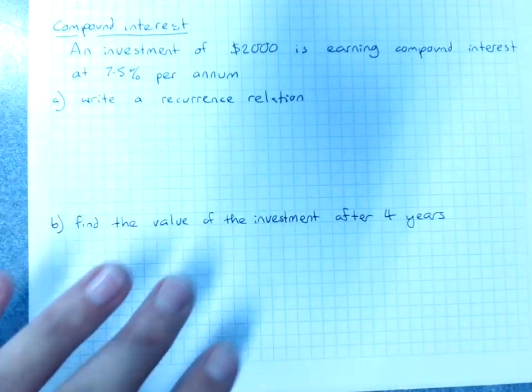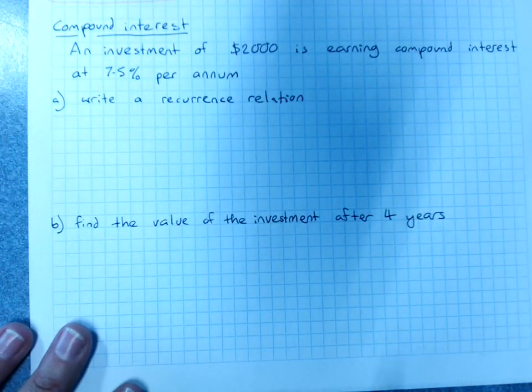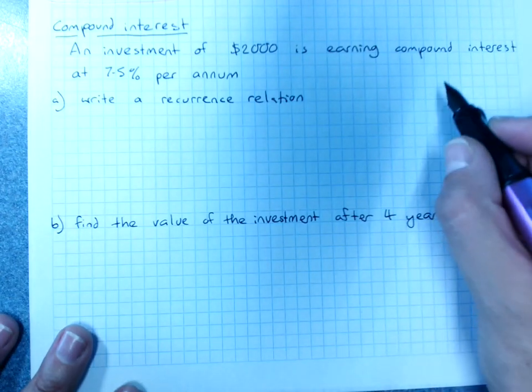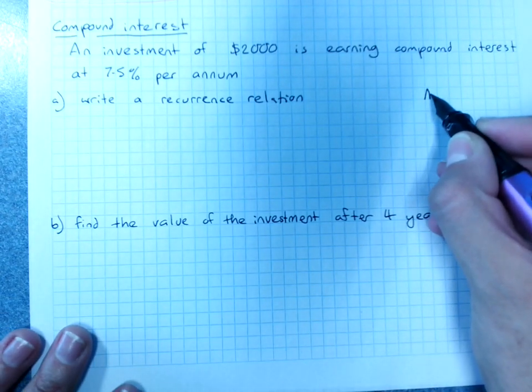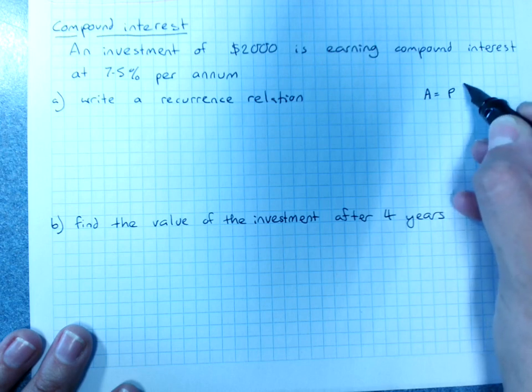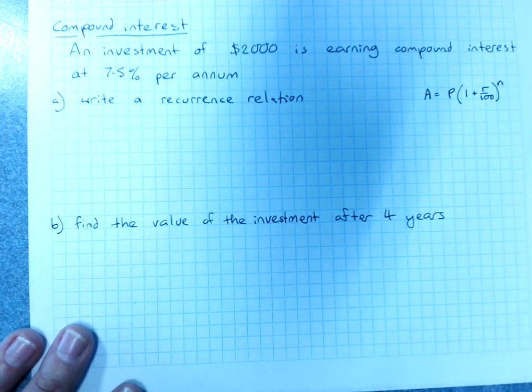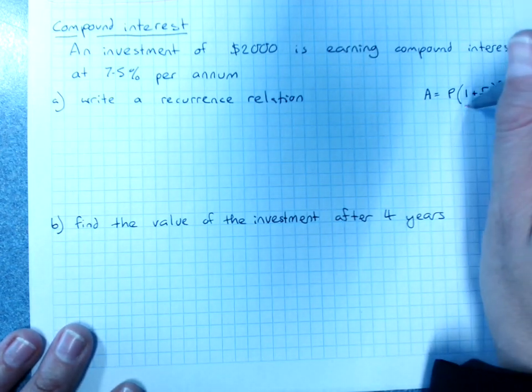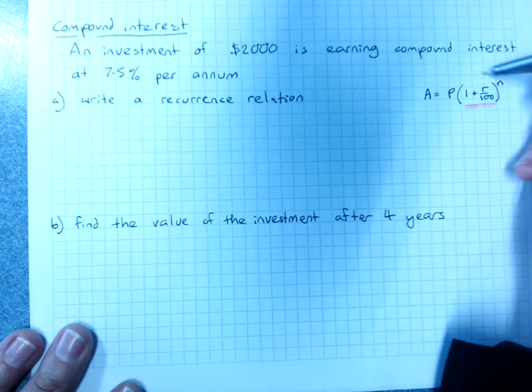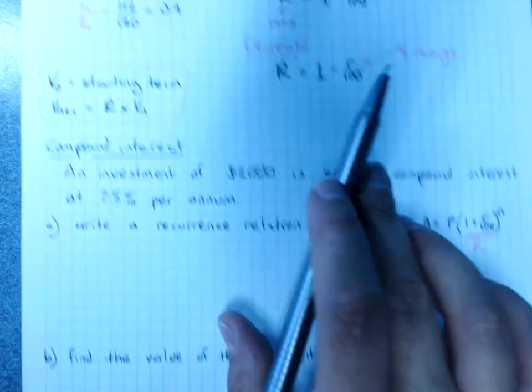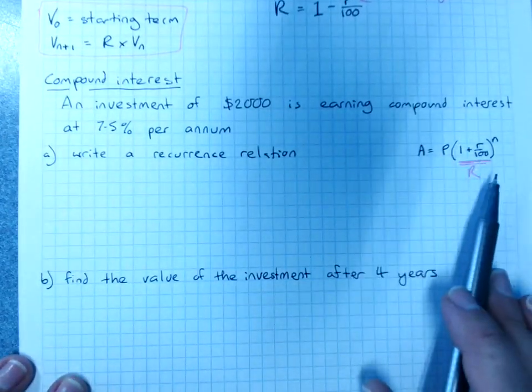Speaking of compound interest, we have to be able to do that. Now compound interest, we're used to using the compound interest formula. The amount equals the principal times 1 plus the interest rate over 100 to the power of the number of time periods. See that there? That's r, that's your common ratio. We just looked at it.